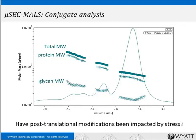By combining three detectors — UV, refractive index, and light scattering — we can analyze protein conjugates, directly determining the molecular weight of the protein in the complex, the molecular weight of the modifier (in this case a glycan), and the total molecular weight. Looking at the product after stress shows aggregates that have formed, but all peaks have constant ratios of protein to glycan — so there has been no chemical change, even though some aggregation occurred.